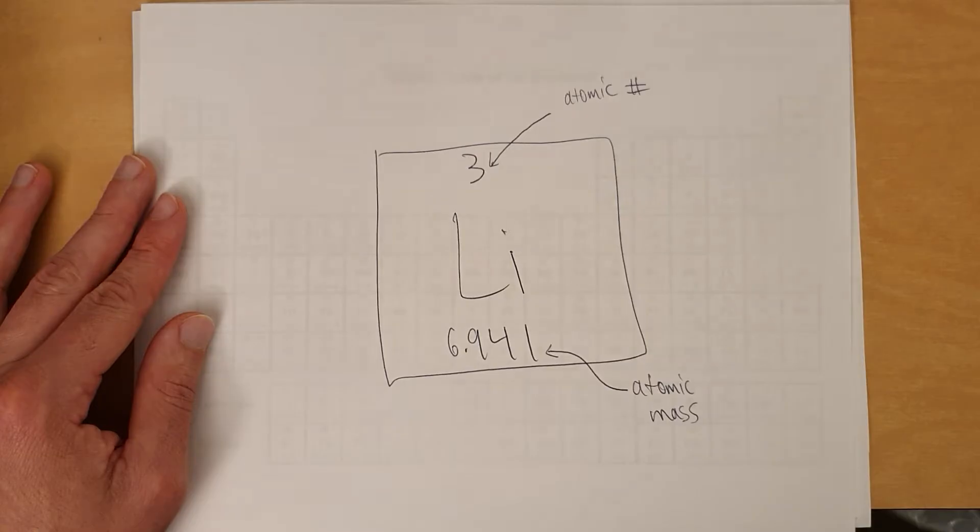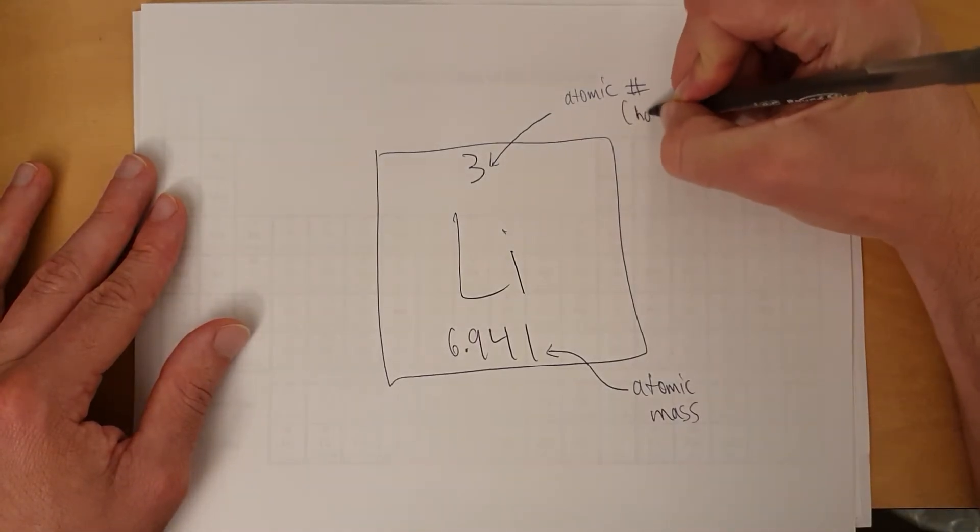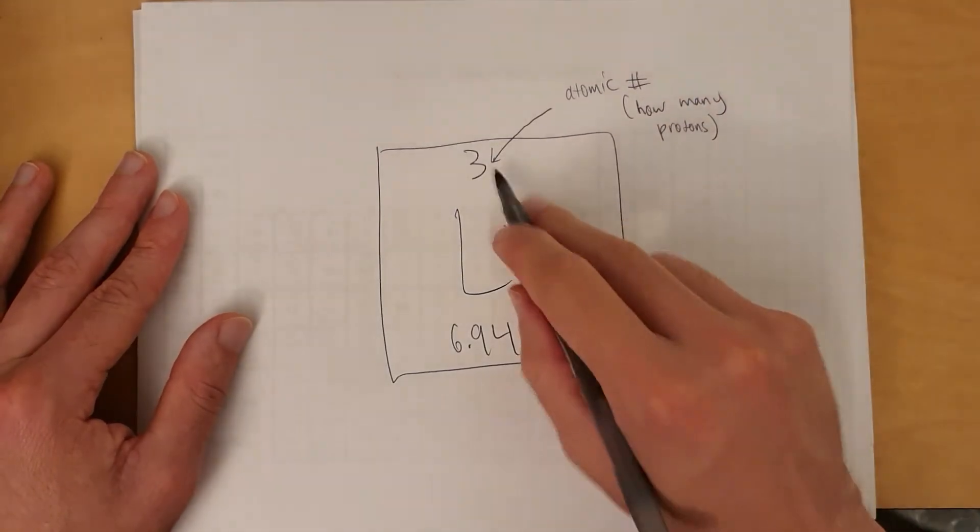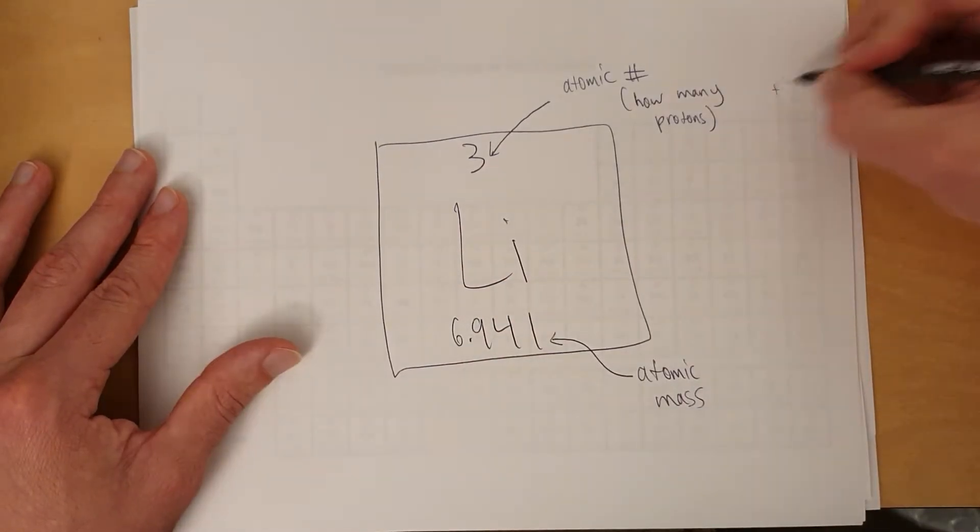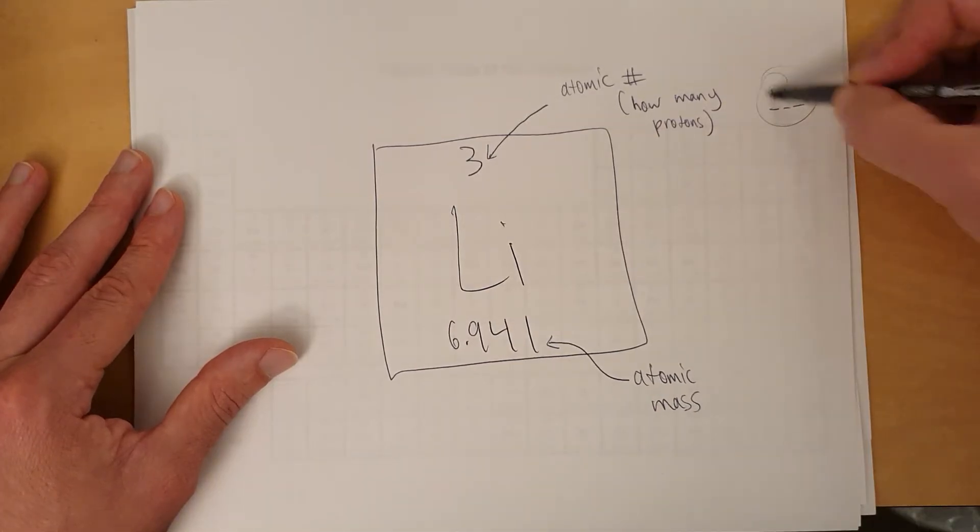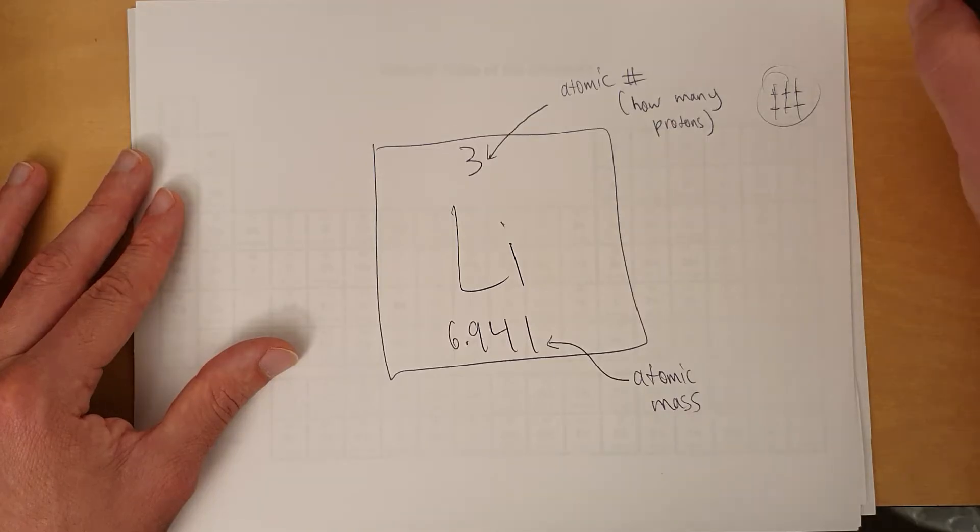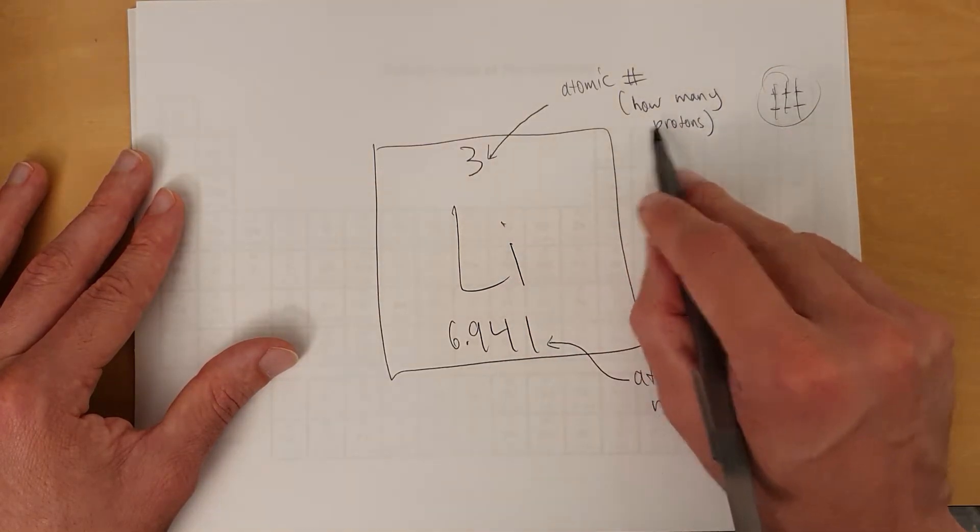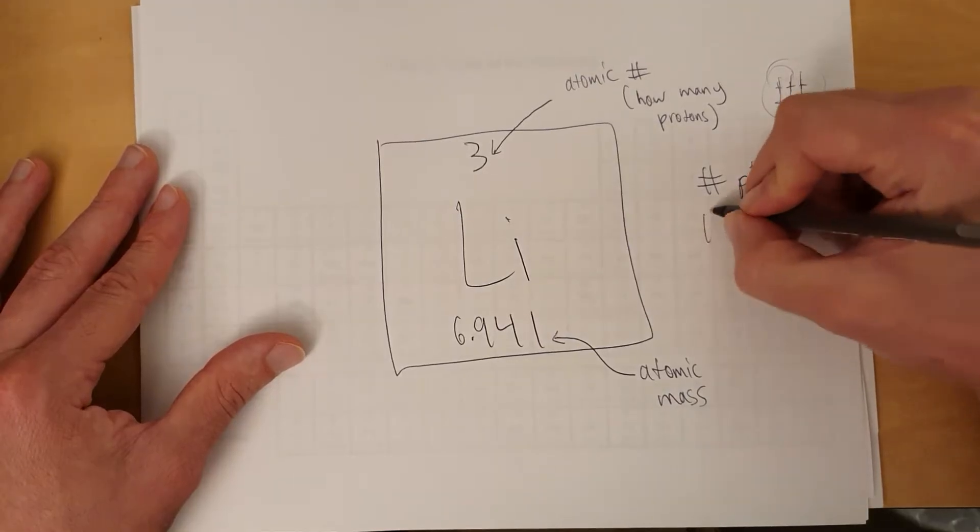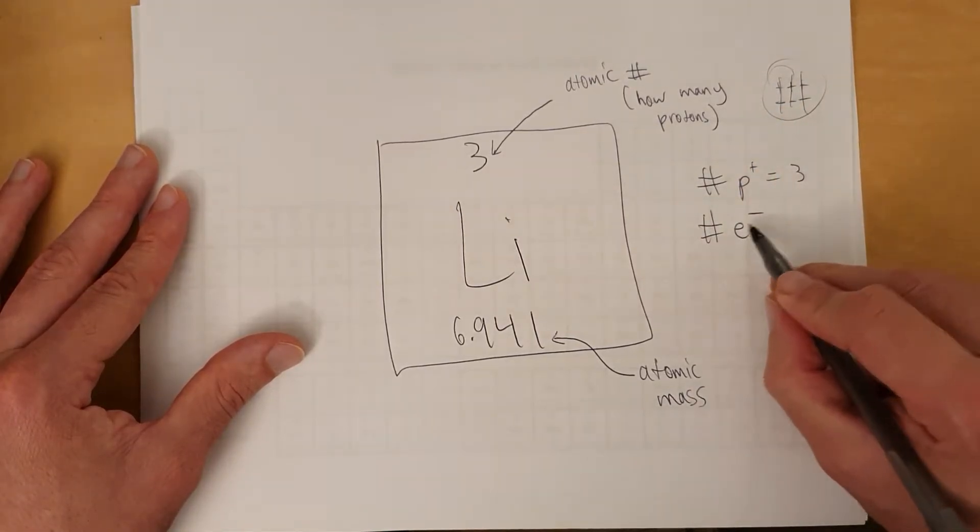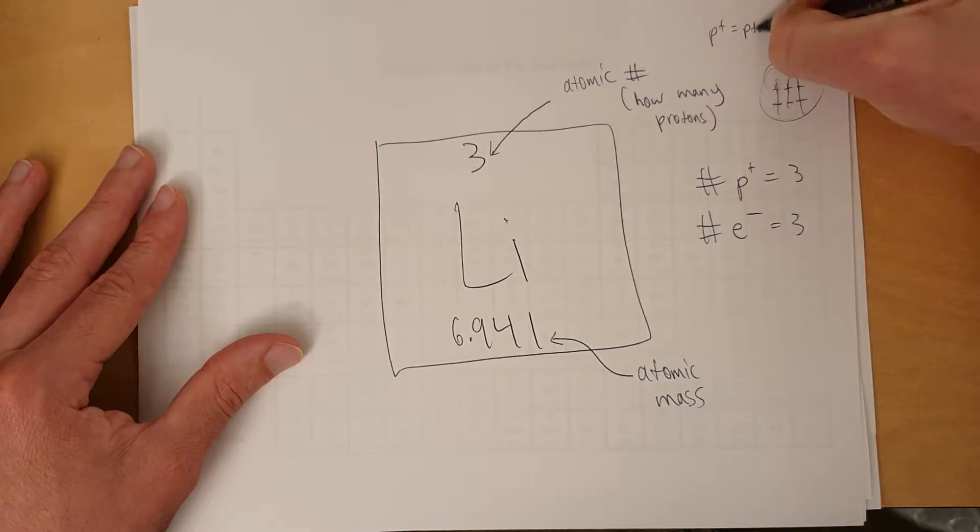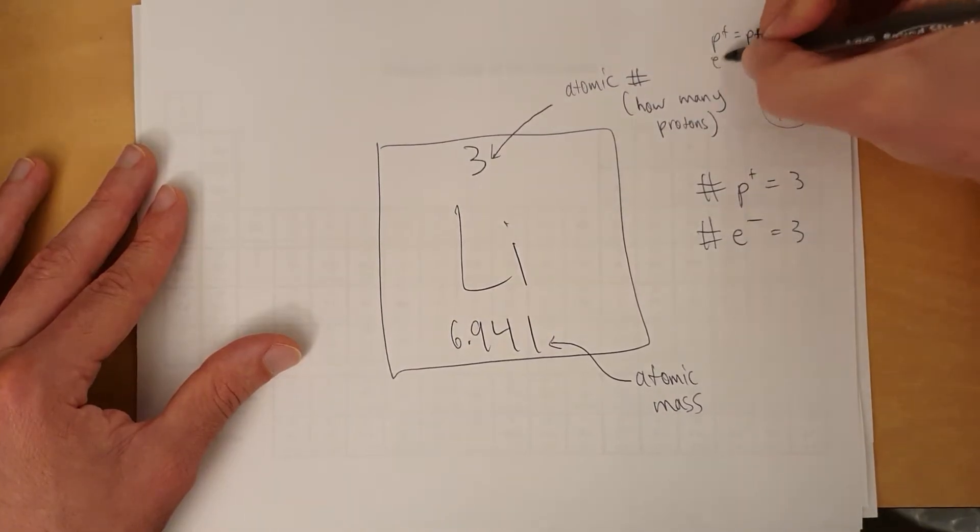So the atomic number will tell you a couple of things. It tells you how many protons it has. Now, assuming it's neutral, a proton is positive, an electron is negative. So in order to be neutral, if it has three protons, it needs three electrons to balance it out in order to give it a neutral charge. So for a neutral element, the number of protons is equal to the number of electrons. So number of protons, that's my favorite abbreviation for proton right there, is three. Number of electrons, that's my favorite abbreviation for electron right there, is also three. So just to be clear, P equals proton, E minus equals electron.